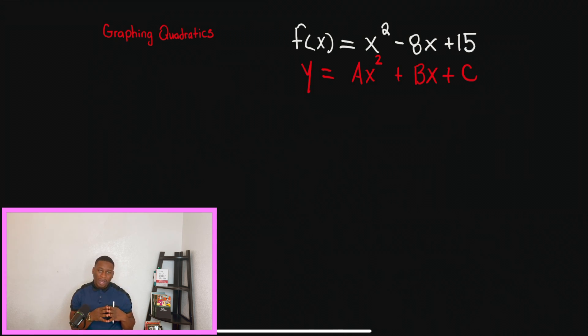So we're talking about graphing from standard form, and that is the equation in red. We should know that our A term is 1, B term is negative 8, and C is 15.